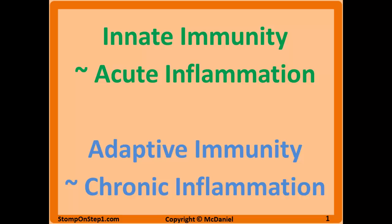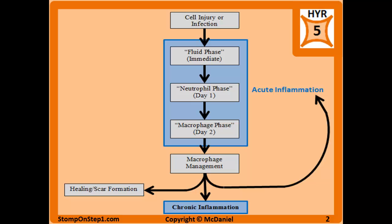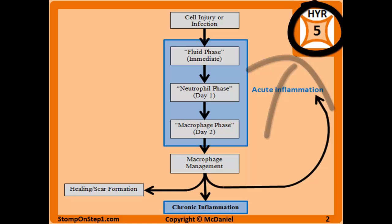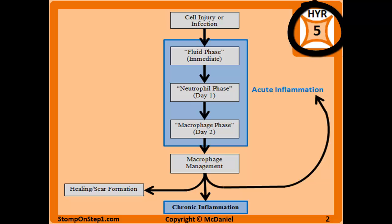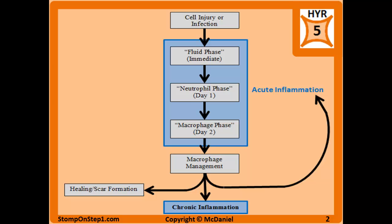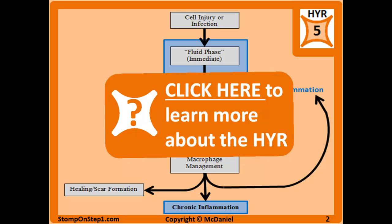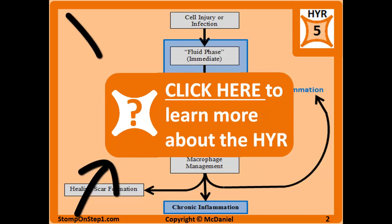Inflammation has a set of distinct phases. Generally speaking, there is acute inflammation which is analogous to the innate immune system, and chronic inflammation which is analogous to the adaptive immune system. Here is a flowchart outlining what happens during inflammation. You can see in the top right corner I give this topic of acute inflammation a high yield rating of 5 — a scoring system from 0 to 10 giving a rough estimate of how important each topic is for the USMLE Step 1. You can click the orange box to learn more about how the rating is calculated.